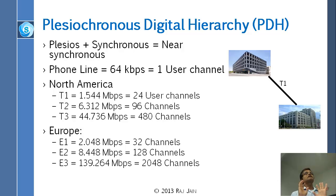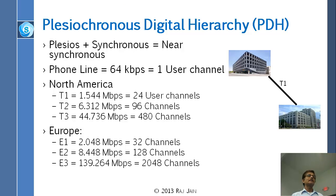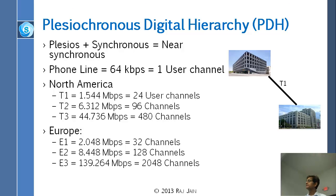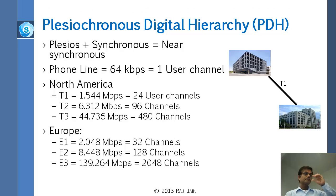So 64 kilobits is what you call telephone voice, and that was the only thing they wanted to send. When they wanted to connect two offices, they said, you want to carry 24 voice circuits on one wire, and that wire will run at 24 times 64, which is 1.544 megabits, and that is called T1 — trunk line 1.